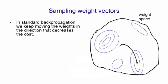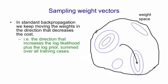Here's a picture of what happens in standard backpropagation. On the right, I've drawn the weight space, which of course is very high dimensional and unbounded — this is a very bad picture of it, but it's the best I can do. In this weight space, I've drawn some contours of equal values of our cost function. The way backpropagation is normally used is we start with some small value of the weights and then we follow the gradient, moving downhill in the cost function in the direction that increases the log likelihood plus the log prior summed over all training cases.